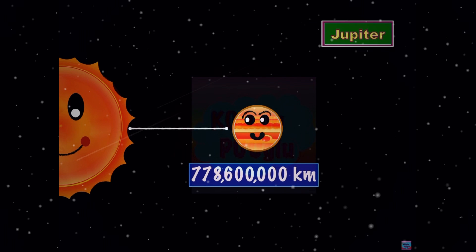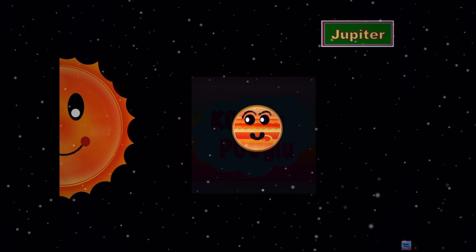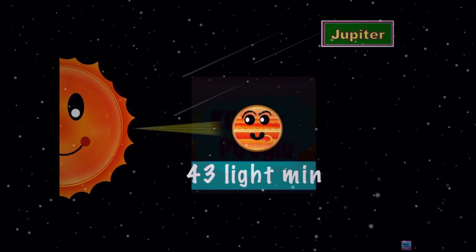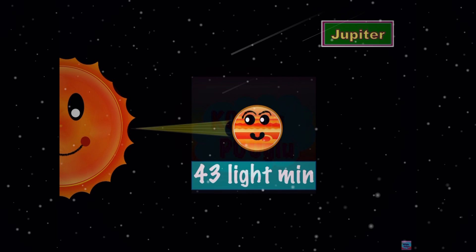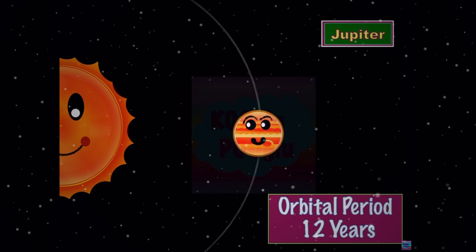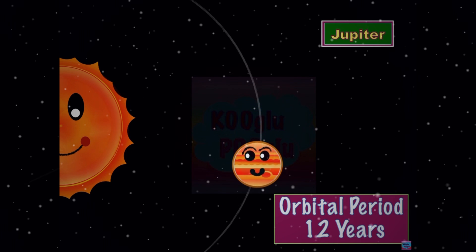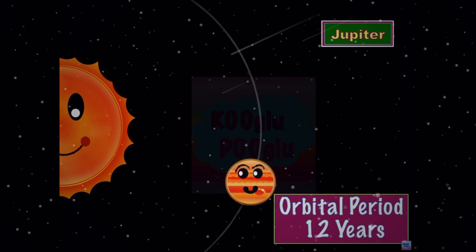Now we're on Jupiter. It's 778 million kilometers away from the Sun. It's 43 light minutes away, and its orbital period is 4,333 days, or 12 years on planet Earth.